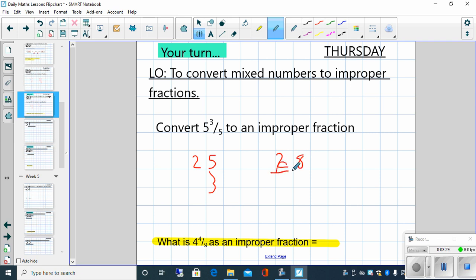So 25 plus 3 is 28. Oh sorry, 28 fifths. Our denominator stays exactly the same. 5 multiplied by 5 is 25 plus 3 is 28. 28 fifths.